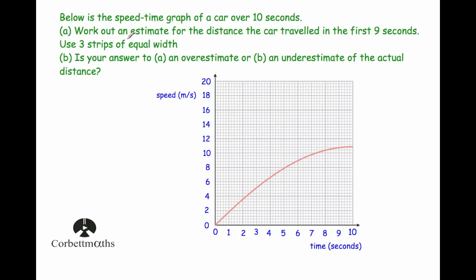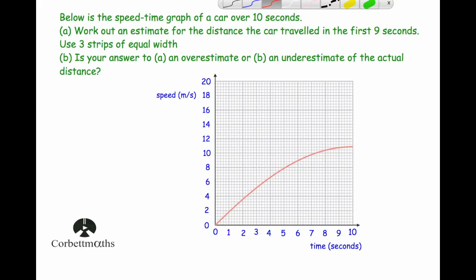Example two: below is a speed-time graph of a car over 10 seconds. Part a — work out an estimate for the distance traveled in the first nine seconds using three equal-width strips. Part b — is the answer an overestimate or underestimate? Key fact: on a speed-time graph, the area under the graph gives the distance traveled, because distance = speed × time.